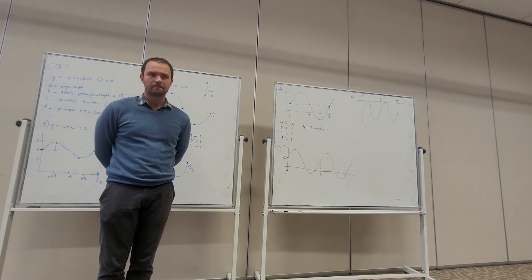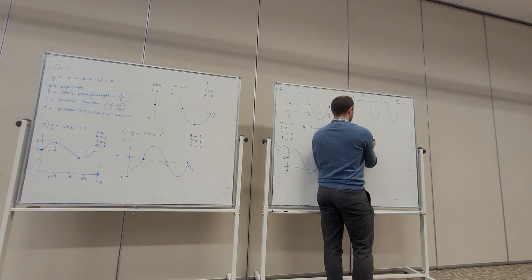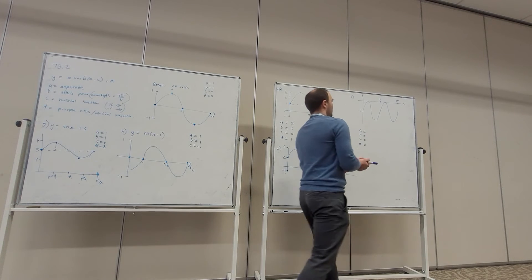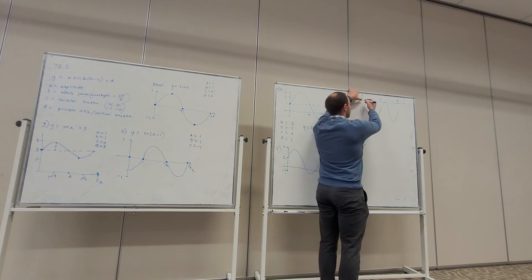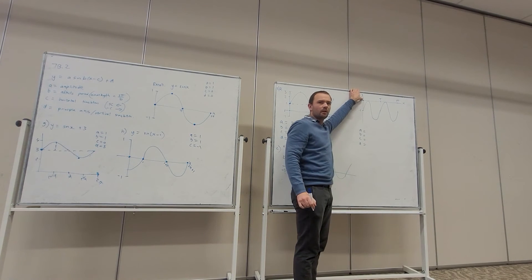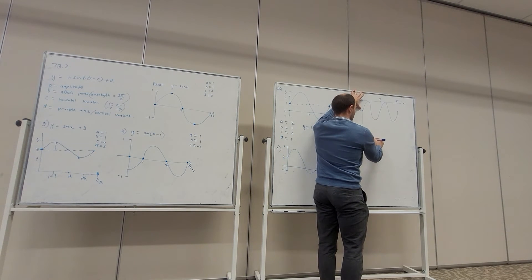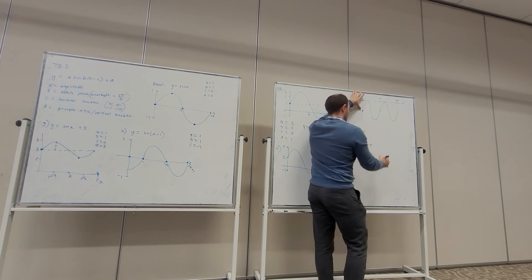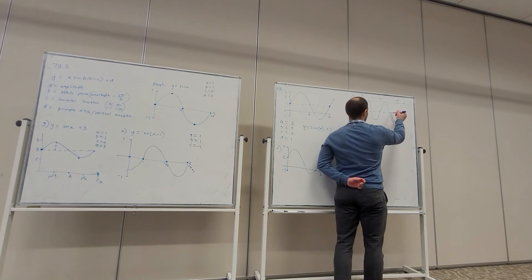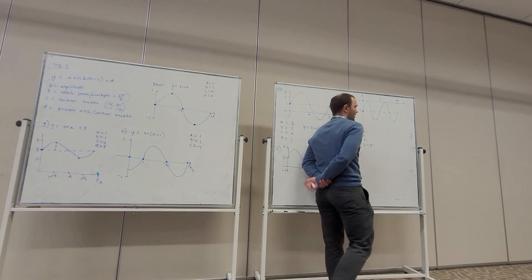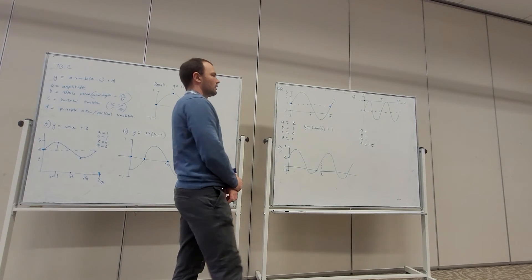Let's have a look at example b. Let's identify all those values — a, b, c, and d. First let's find the principal axis, or where does it begin? The base sine function begins at 0, so this one is starting at minus 5, and so our value of d is minus 5. This is our principal axis — that's the line about which both the peak and the troughs continue.